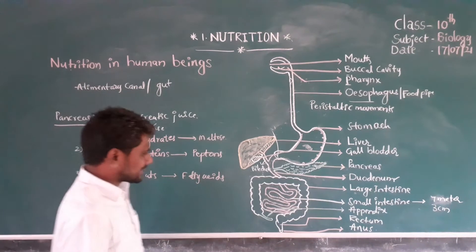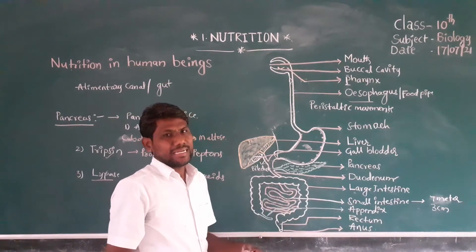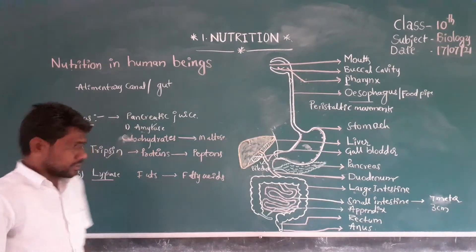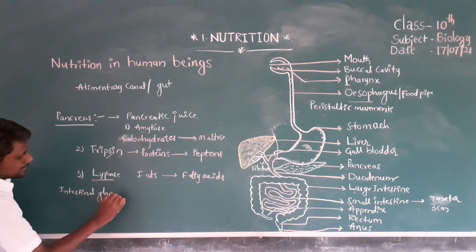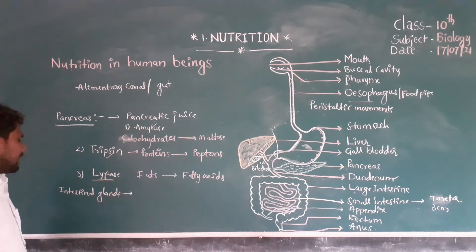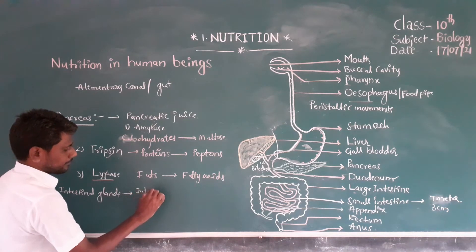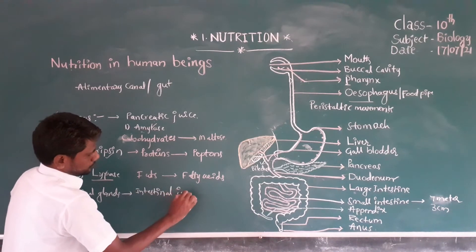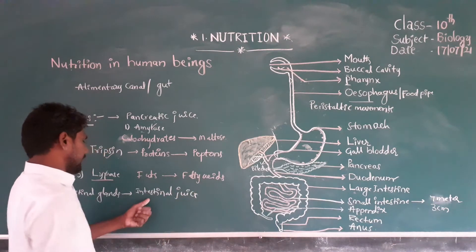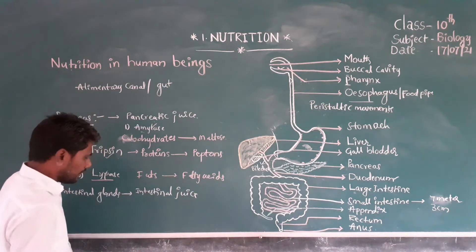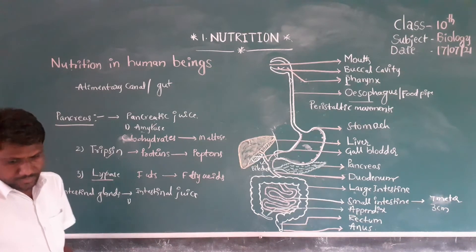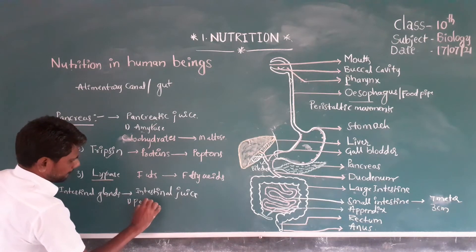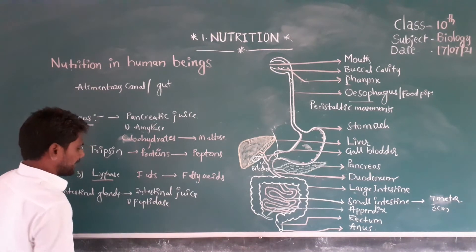Next, the small intestine consists of glands called intestinal glands. These glands secrete intestinal juice. This intestinal juice consists of two types of enzymes. The first one is peptidase.